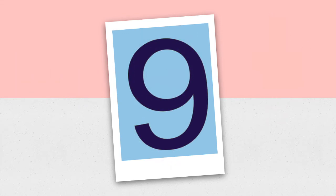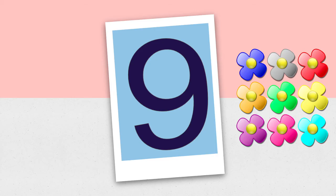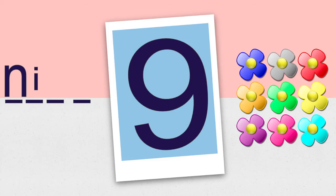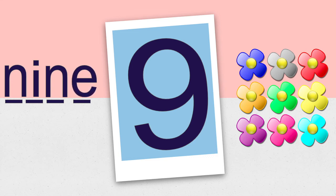Nine. The word nine also has two vowels. Here are nine pretty flowers. I'm gonna say the sounds and I want you to yell out the letter. N... i... n. Do you remember what the last letter is going to be? That's right, it's an e. This word follows the two vowel rule — the first vowel says its name and the next vowel is silent. N, i, n, e spells nine.